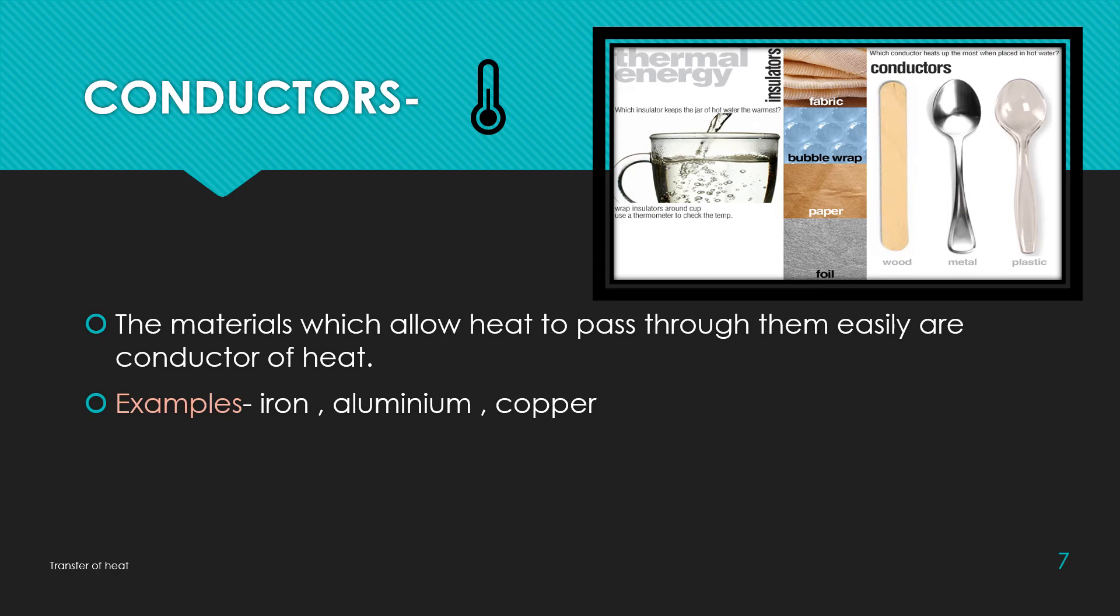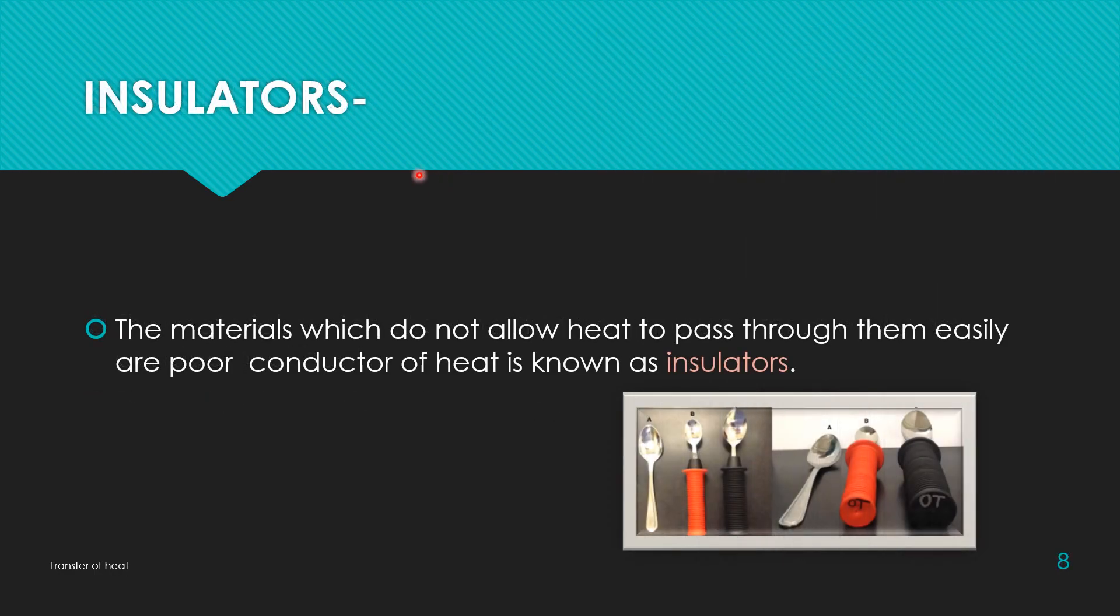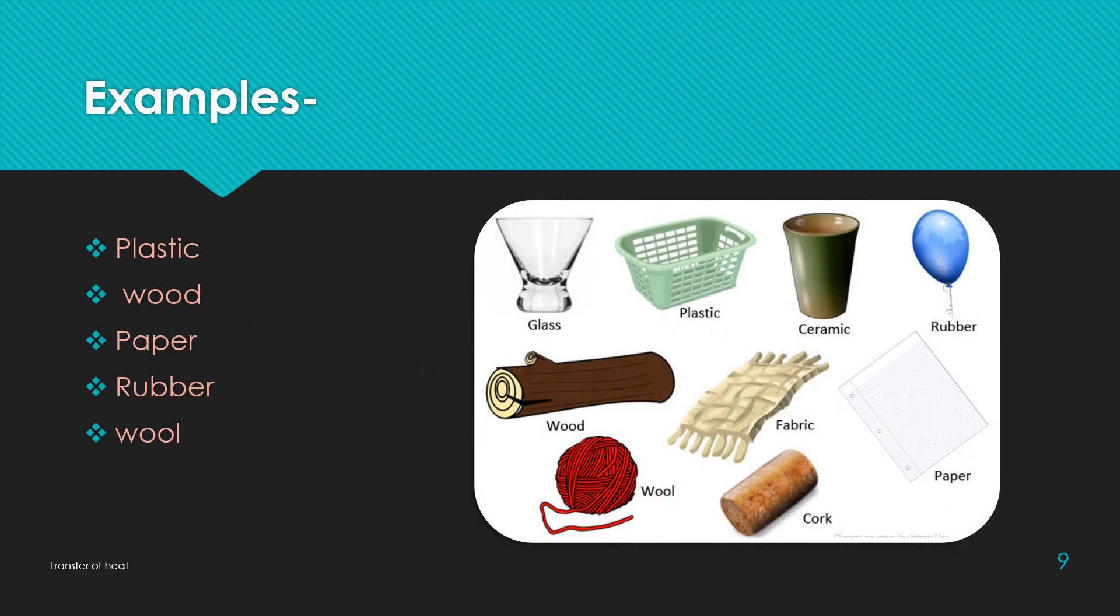And now we can understand what is insulator. Insulators are the materials which do not allow heat to pass through them easily. Poor conductors of heat are known as insulators. These are the insulators, therefore there are plastic or wooden handles in our utensils for not passing the heat. Some examples are like plastics, wood, paper, rubber, wool, cork, fabric. These are the examples of insulators.